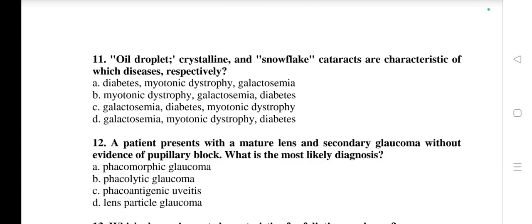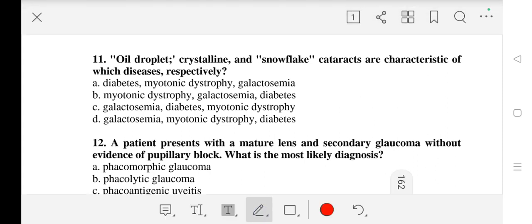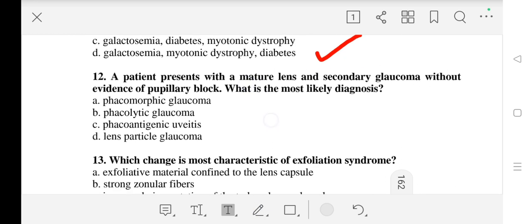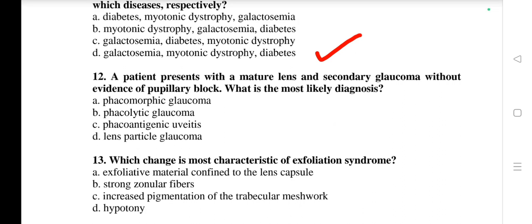Question number 11: Oil droplet, crystalline, and snowflake cataracts are characteristic of which diseases respectively? The right answer is D - galactosemia, myotonic dystrophy, and diabetes. Question number 12: A patient presents with a mature lens and secondary glaucoma without evidence of pupillary block. What is the most likely diagnosis? The right answer is B - phacolytic glaucoma.